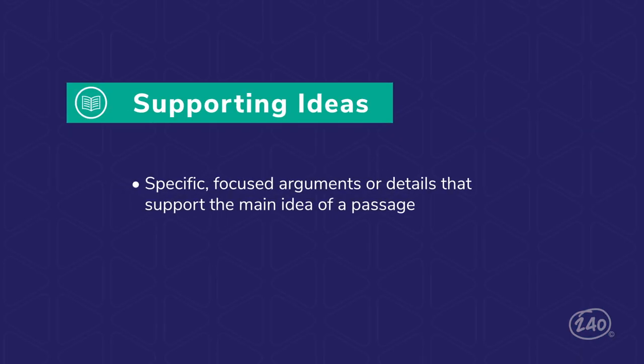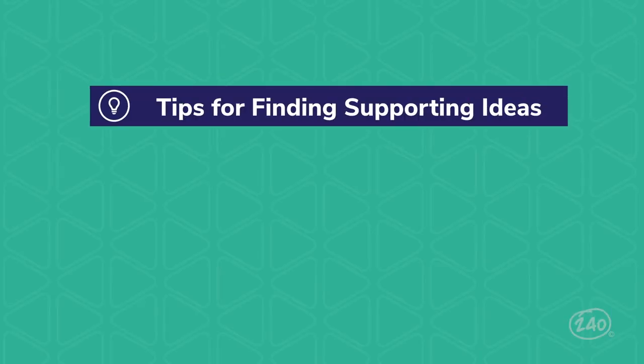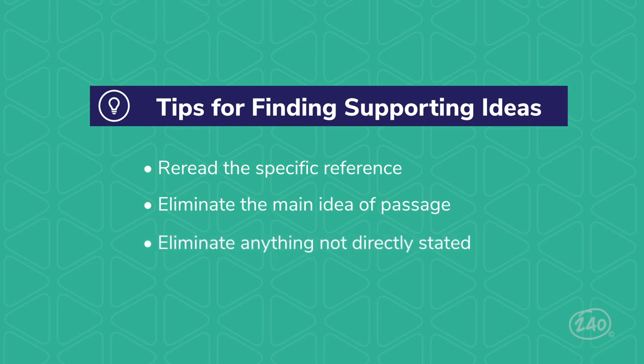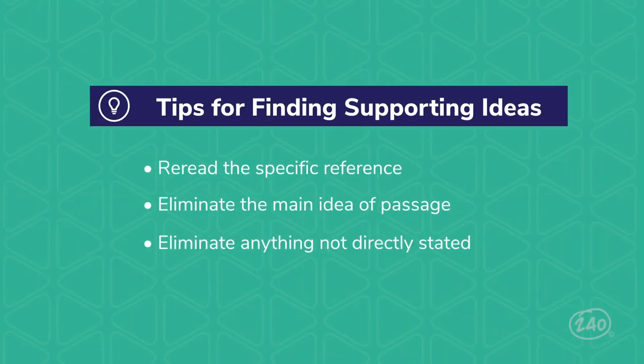Supporting ideas are specific focused arguments or details that support the main idea of a passage. To identify supporting ideas: find the specific reference in the passage and re-read it — this is often presented as a noun in the question. A common distractor is the main idea of the entire passage; remember, supporting idea questions are much more focused. Eliminate anything not directly stated in the passage — you're not inferring or drawing a conclusion here. Also eliminate anything contradicting the main idea of the passage.